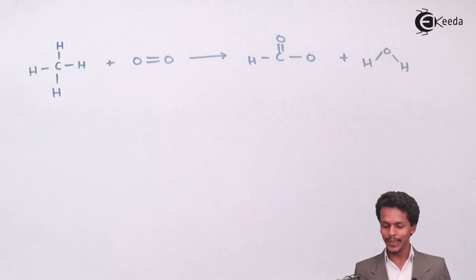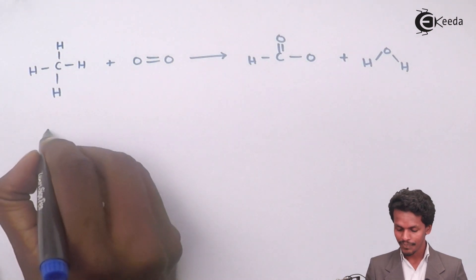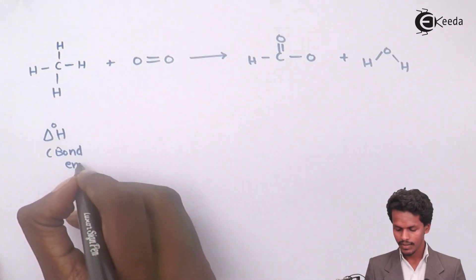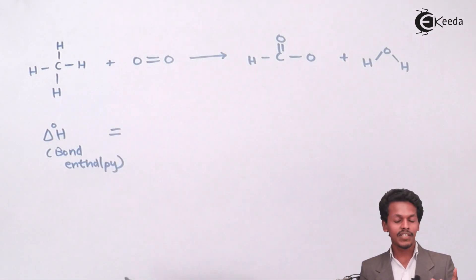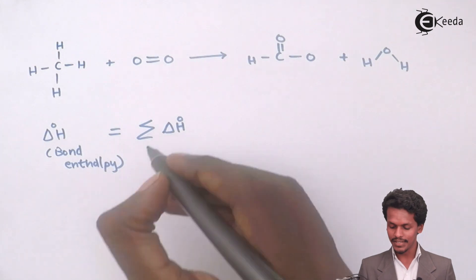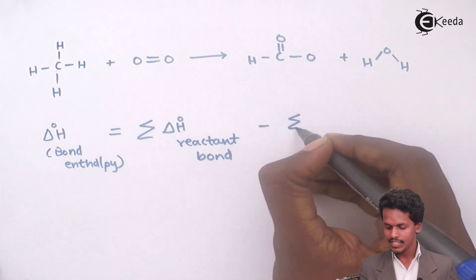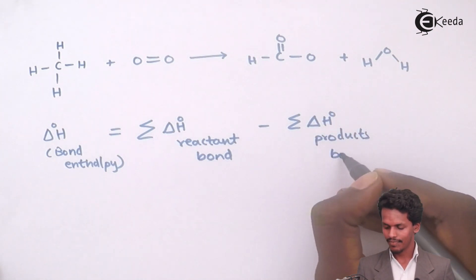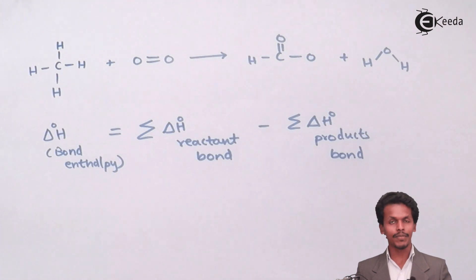Now it is very easy to calculate the bond enthalpy. Delta H for bond enthalpy is the sum of delta H° of the reactant bonds minus the sum of delta H° of the product bonds.